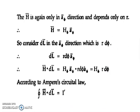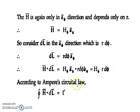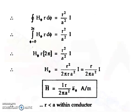H is in the direction of a-phi and depends upon r, so H = H_phi × a_phi. Also, dl = r dφ a_phi. Therefore H dot dl = H_phi a_phi dot r dφ a_phi = H_phi r dφ, since a_phi dot a_phi = 1. According to Ampere's circuit law, the closed integral of H dot dl equals the current enclosed, which is I dash.